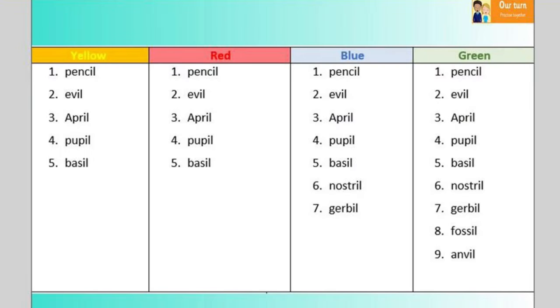Let's look at our spelling words then. So yellow and red have pencil, evil, April, pupil, basil. Blue group have all of those as well but also with nostril and gerbil and green have those with fossil and anvil. What's our spelling rule this week?